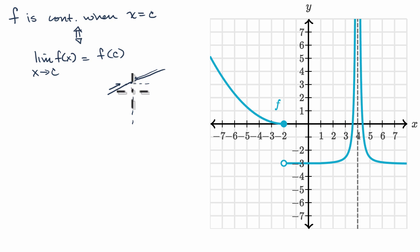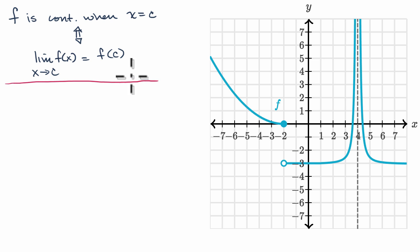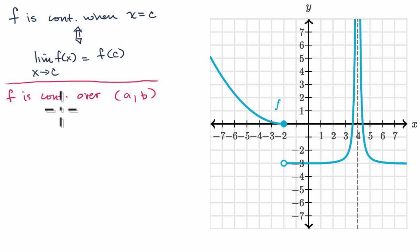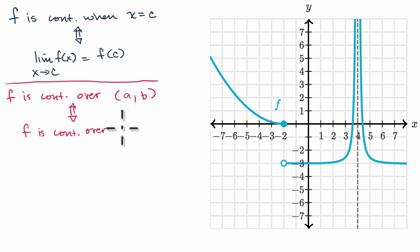With that out of the way, let's discuss continuity over intervals. I'm going to first talk about an open interval and then about a closed interval, because a closed interval gets a little bit more involved. So we say f is continuous over an open interval from a to b — the parentheses instead of brackets shows we're not including the endpoints, so all the points between x equals a and x equals b but not equaling a or b — if and only if f is continuous over every point in the interval.